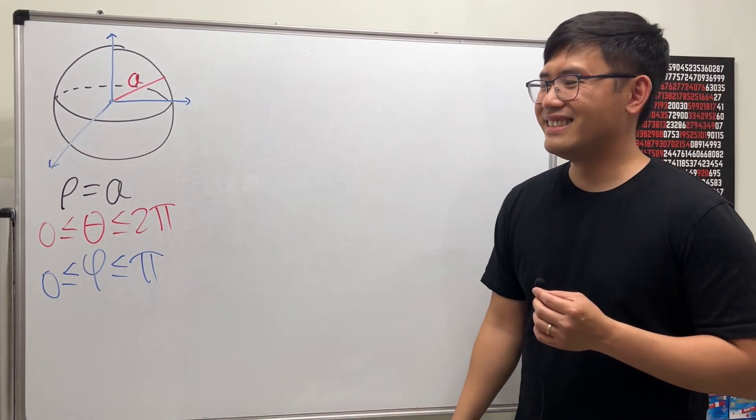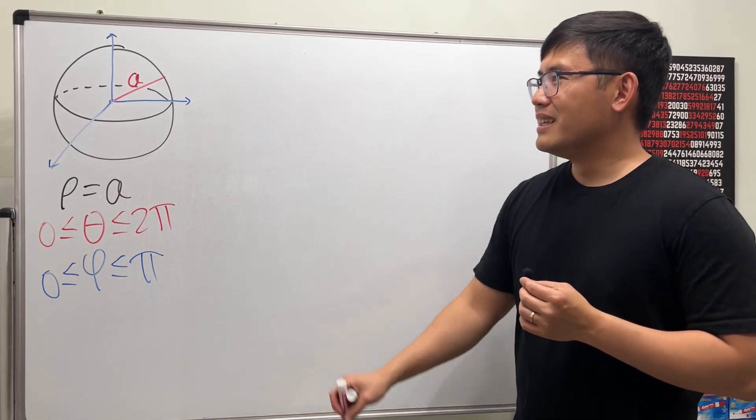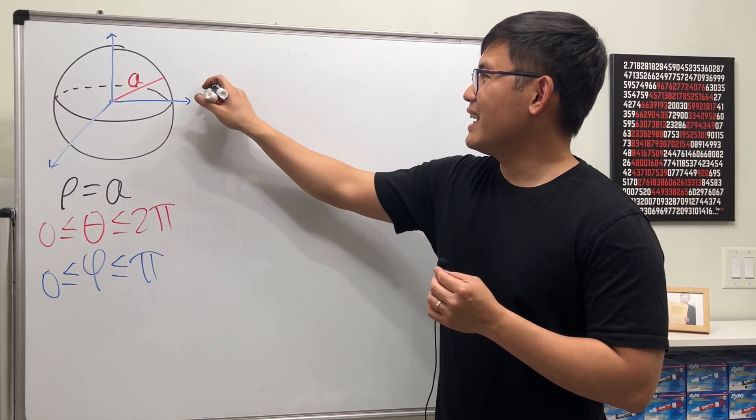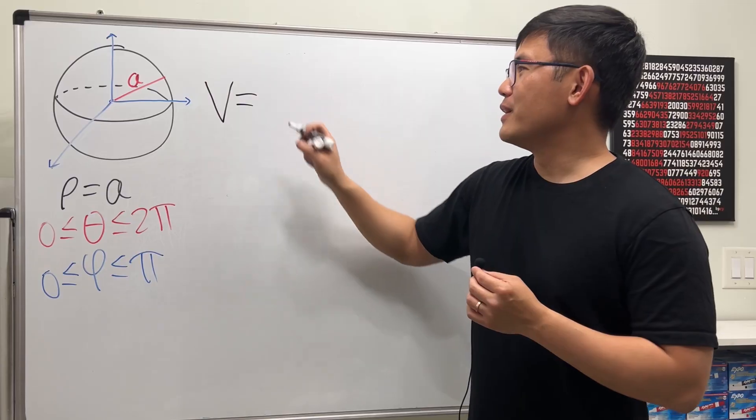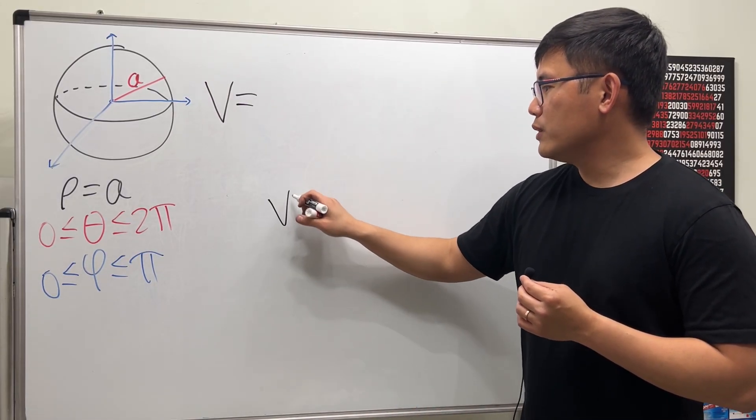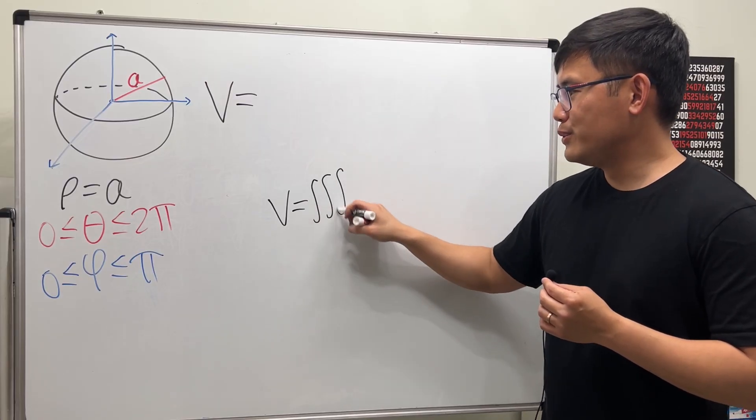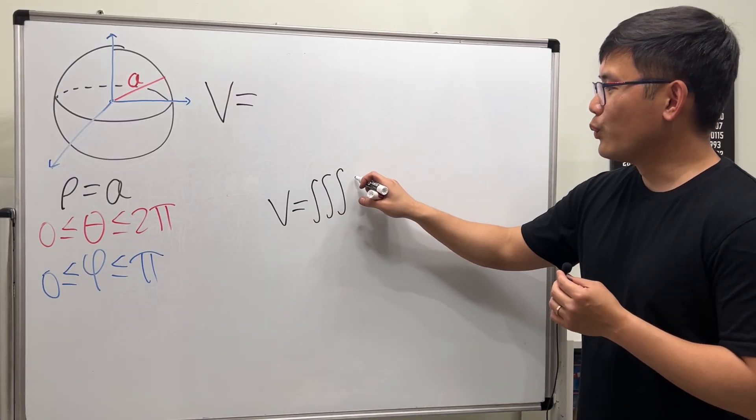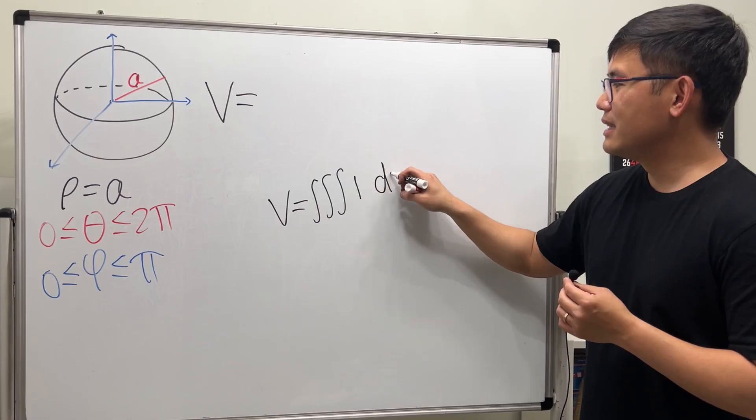Very nice, huh? Notice they are all constants. So when we set up our volume integral, it's going to be very nice. Now, if we use a triple integral for the volume, 1, 2, 3, right? We just have to do 1 times dV.